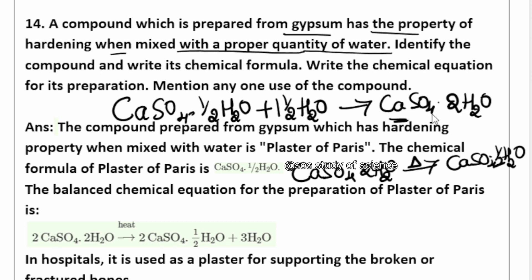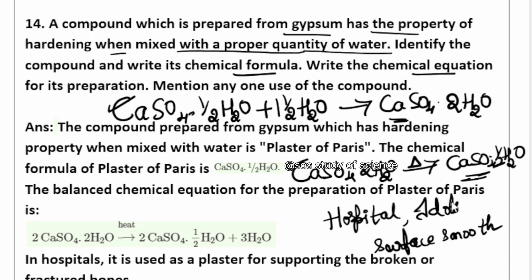We have written the chemical formula and chemical equation for POP's preparation. For the uses of POP: it is used in hospitals to support fractured bones, it is used to prepare articles and idols, and it is also used to make surfaces smooth. So we get gypsum when we add water to POP, and when we heat gypsum we get POP back.